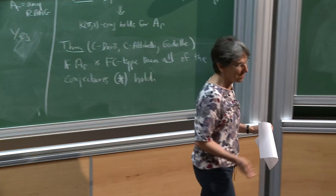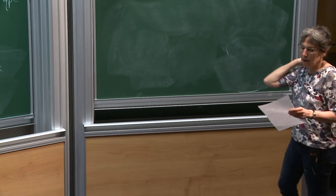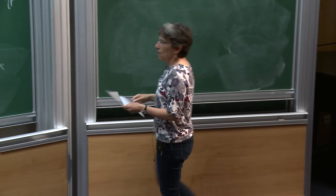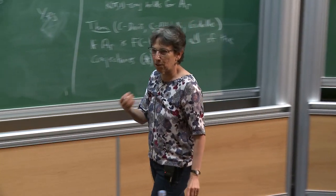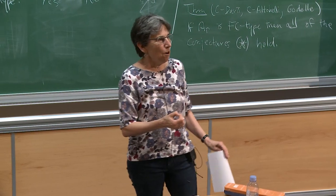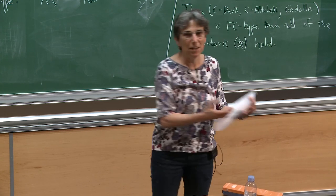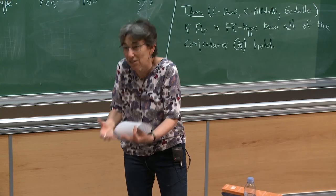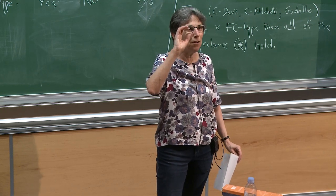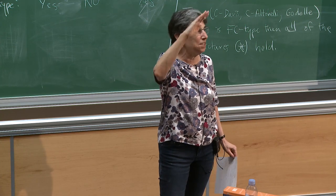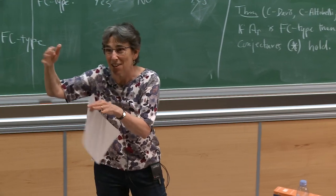It turns out that the one-skeleton of this polytope is exactly the Cayley graph of W_T. So every point in the polytope corresponds to an element of W_T, and crossing one of the walls is done by a reflection. If you read around the boundary you see that sts = tst, which is exactly the Artin relation. This is called a Coxeter cell for W_T.